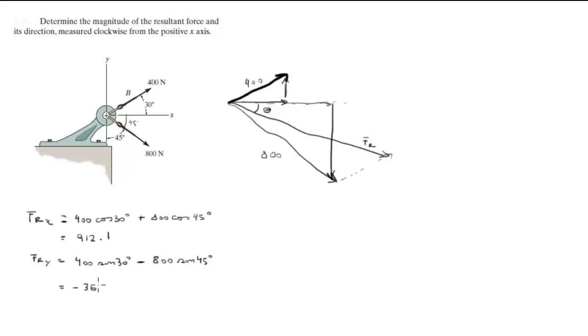You know these two answers are more or less okay because it goes about 912 this way and then goes down around 365, so it's more or less where we want it to be. Now we've got to convert this into polar form. To calculate the magnitude of Fr, we simply do the square root of 912.1 squared plus 365.69 squared. I don't put the negative because negative times negative is positive. When you calculate this, you get 982.68. That's the magnitude.